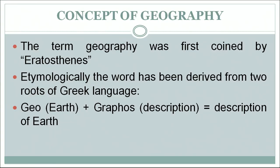Firstly we should know what the concept of geography is. The term geography was first used by Eratosthenes. Etymologically the word has been derived from two roots of the Greek language. The first is 'geo' meaning earth, and 'graphos' meaning description. Put together they mean the description of earth or the writing about the earth.